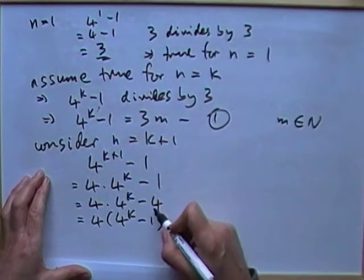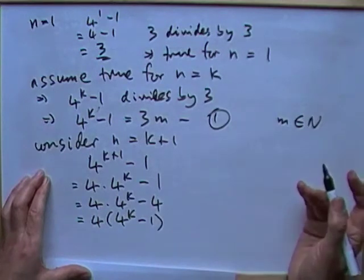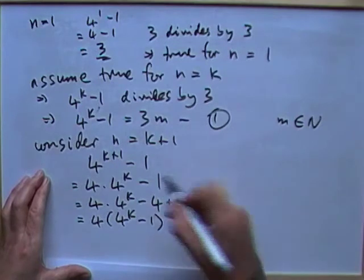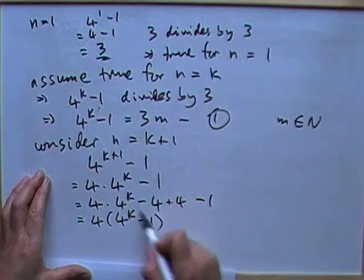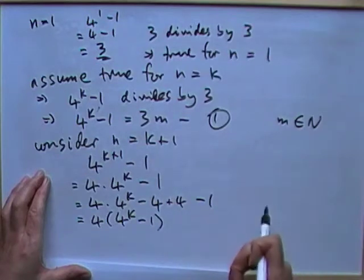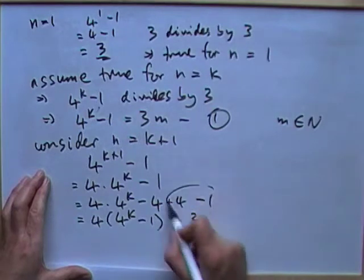I can either say change that to a 4 and then correct it by adding 3, which would do it straight away. Or I could say minus 4 plus 4 and still have the minus 1 at the end. And think of it as having added and subtracting a convenient term. You can think of it either way around.